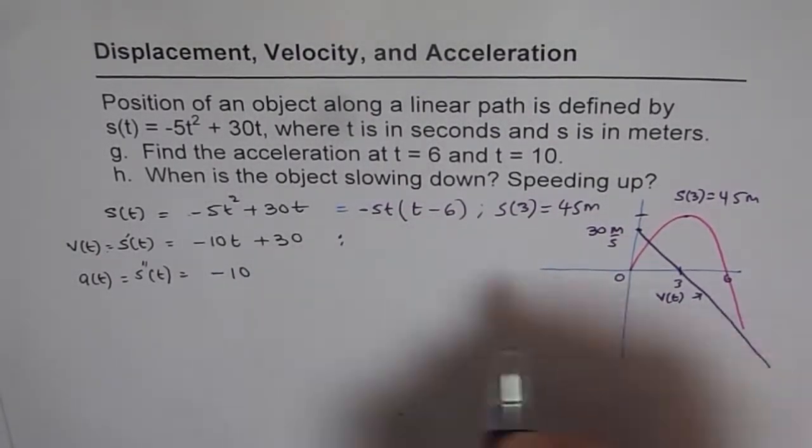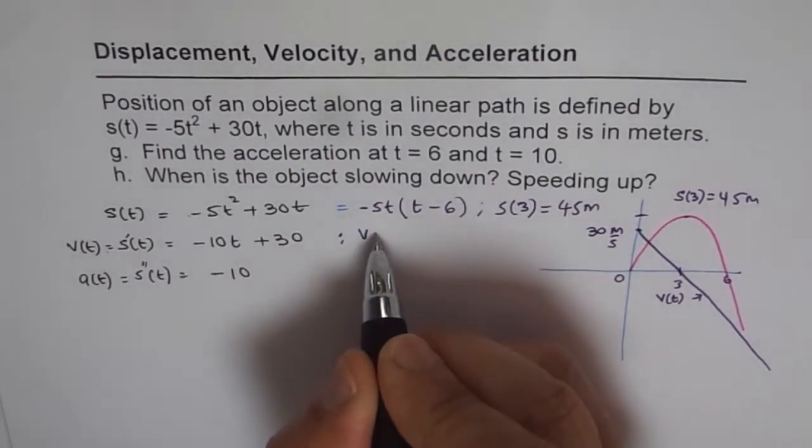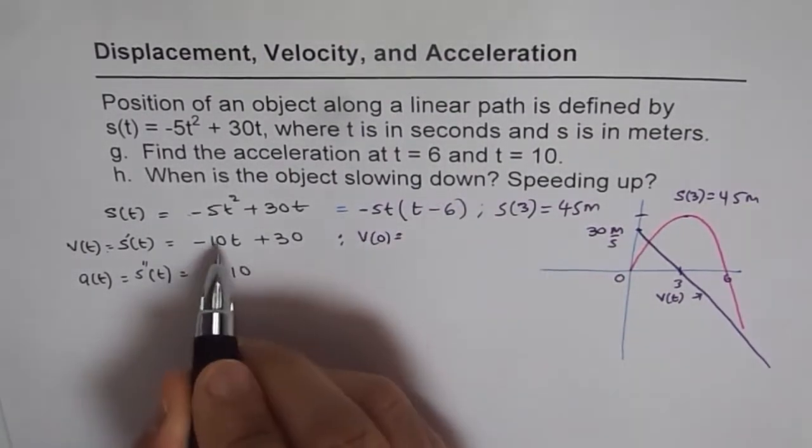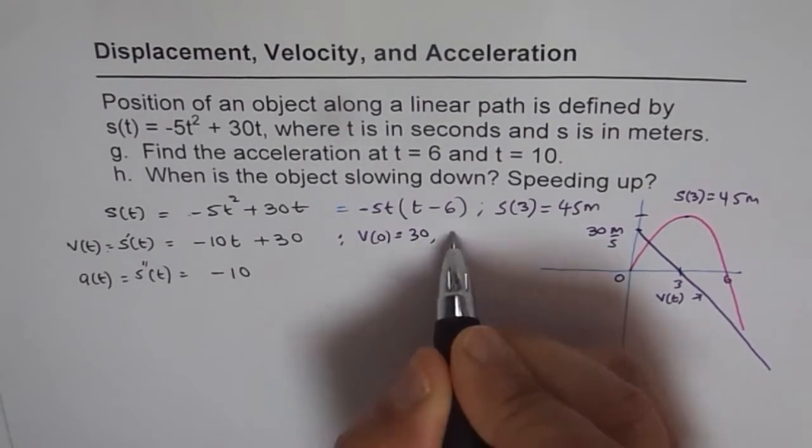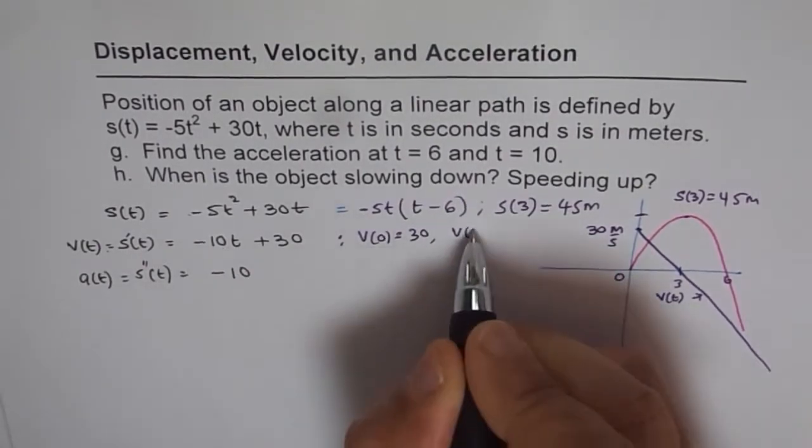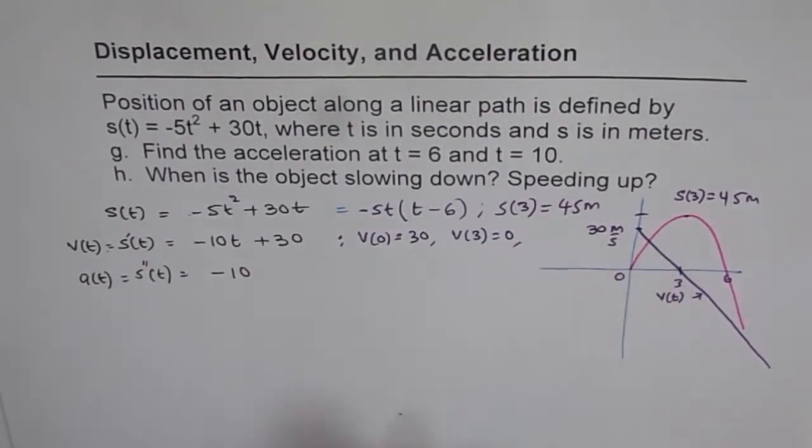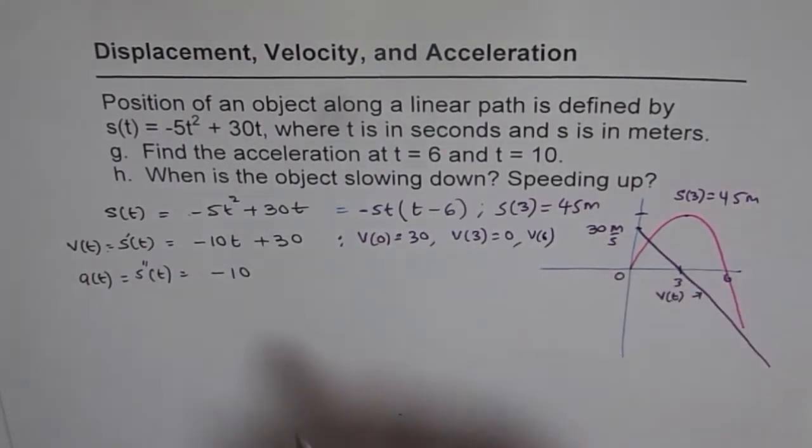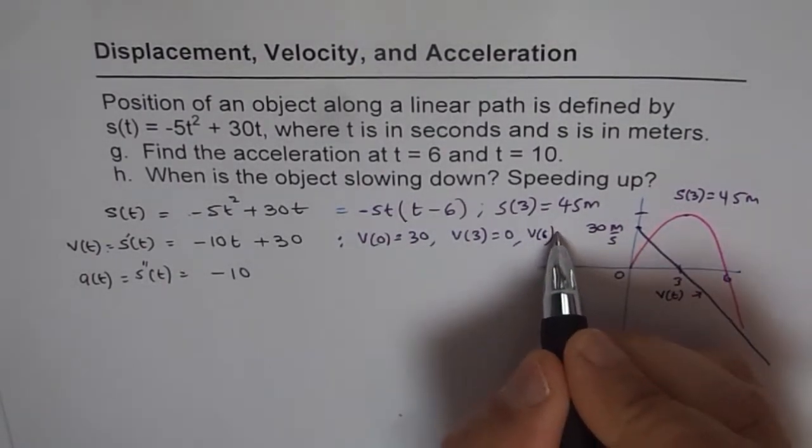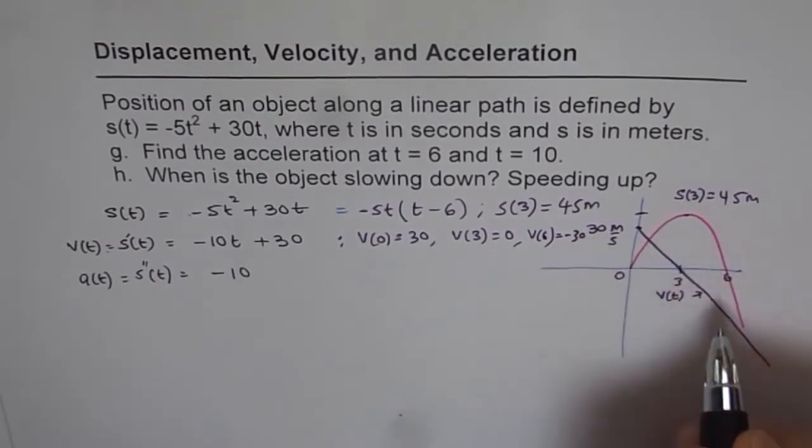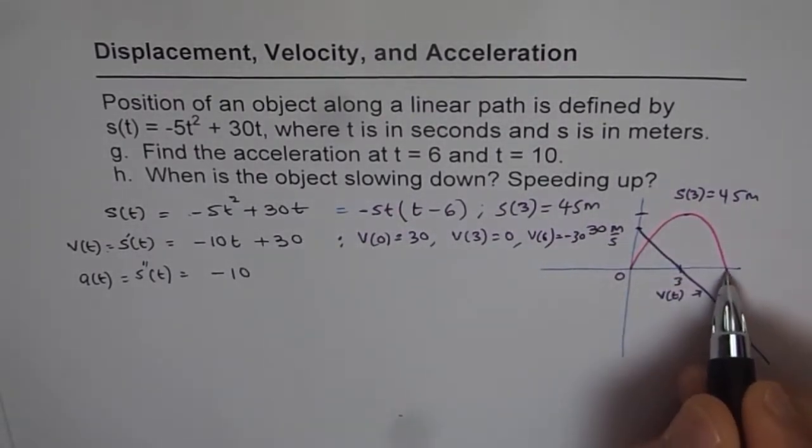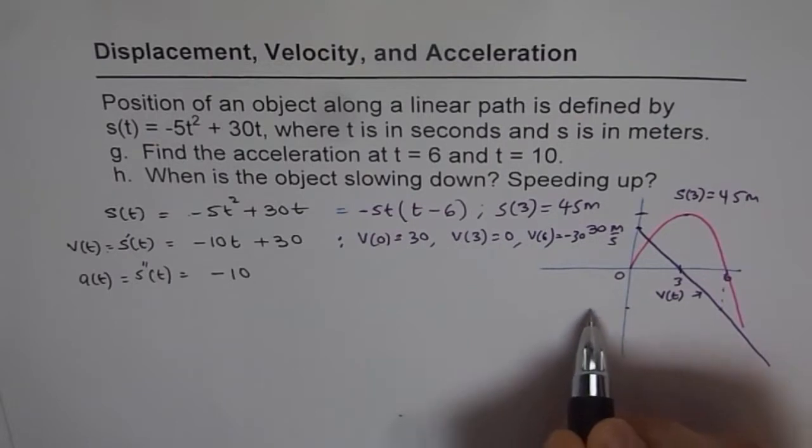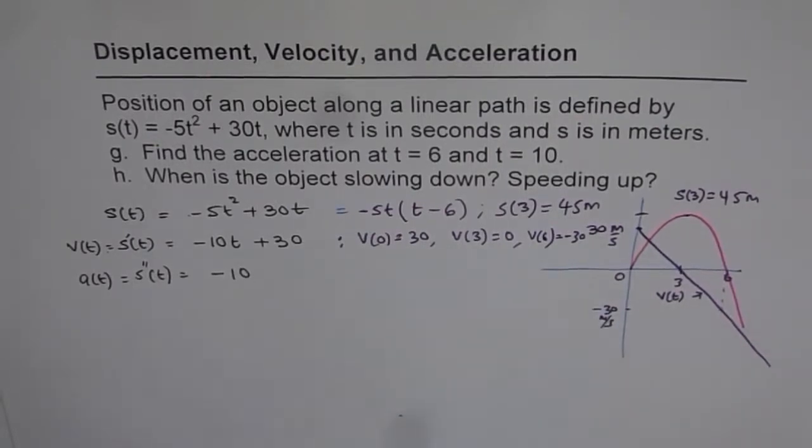From the velocity graph, we can plug in values. V(0) = 30, if I place 3 here, it's 0, and V(6) = -30. We get a negative value. At 6, we get -30 meters per second for velocity.